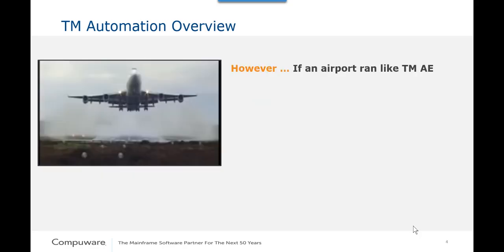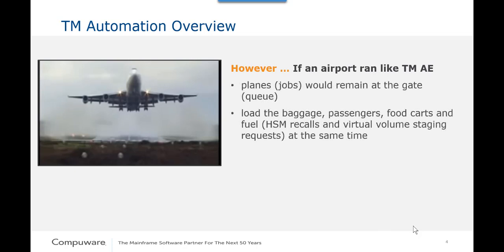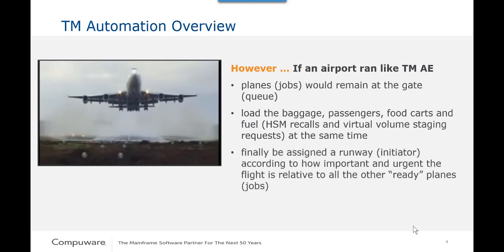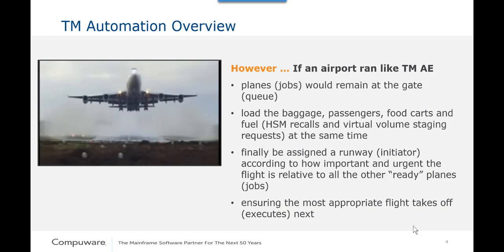However, if an airport ran like Throughput Manager automation, planes would remain at the gate and load the baggage, passengers, food carts, and fuel all at the same time. Finally, it would be assigned a runway according to how important and urgent the flight is relative to all the other ready planes, which ensures the most appropriate flight takes off next.